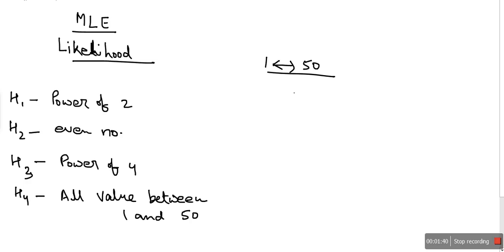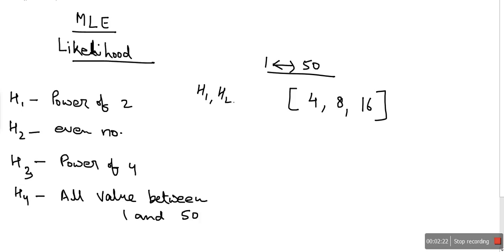Let's say we are given a data set of 4, 8, and 60. As we can see, this data set fulfills hypothesis h4, it also fulfills hypothesis h2, it also fulfills hypothesis h1, but it does not fulfill hypothesis h3. So the possible options are h1, h2, and h4. The question is: how are we going to be more specific about which hypothesis is perfect for this data set?